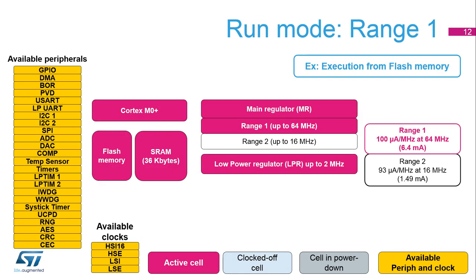In run mode, the CPU is clocked and programs can be executed from flash or SRAM memory. In range 1, the system clock is up to 64 MHz; in range 2, it is up to 16 MHz. By default, the SRAM clock is enabled and can be gated off during sleep mode by software. All peripherals can be activated in range 1. The run mode consumption is 100 microamps per MHz in range 1 at 64 MHz with flash memory on at 25 degrees Celsius.